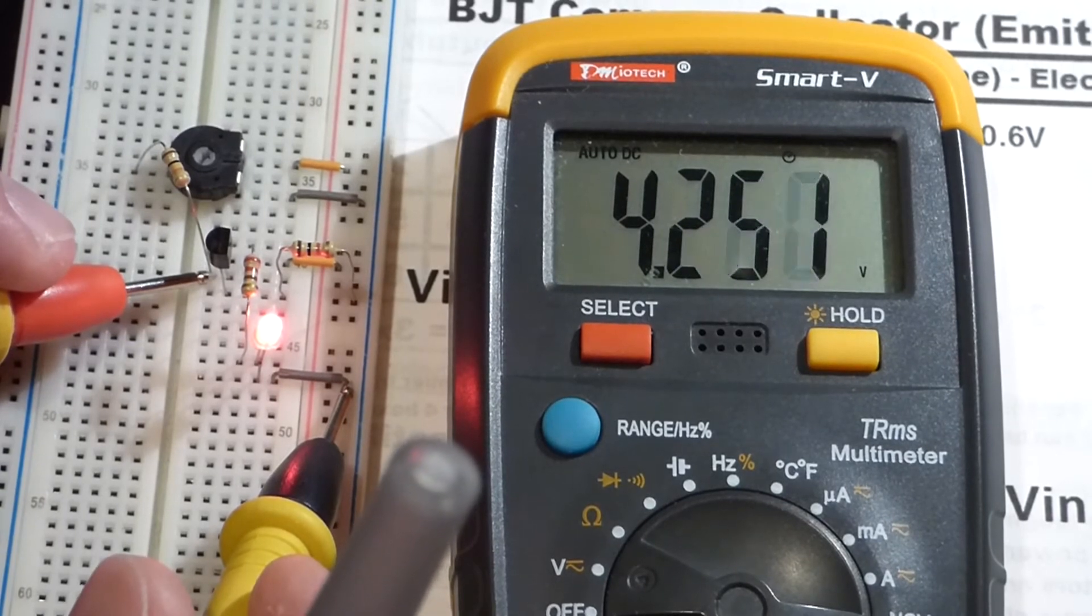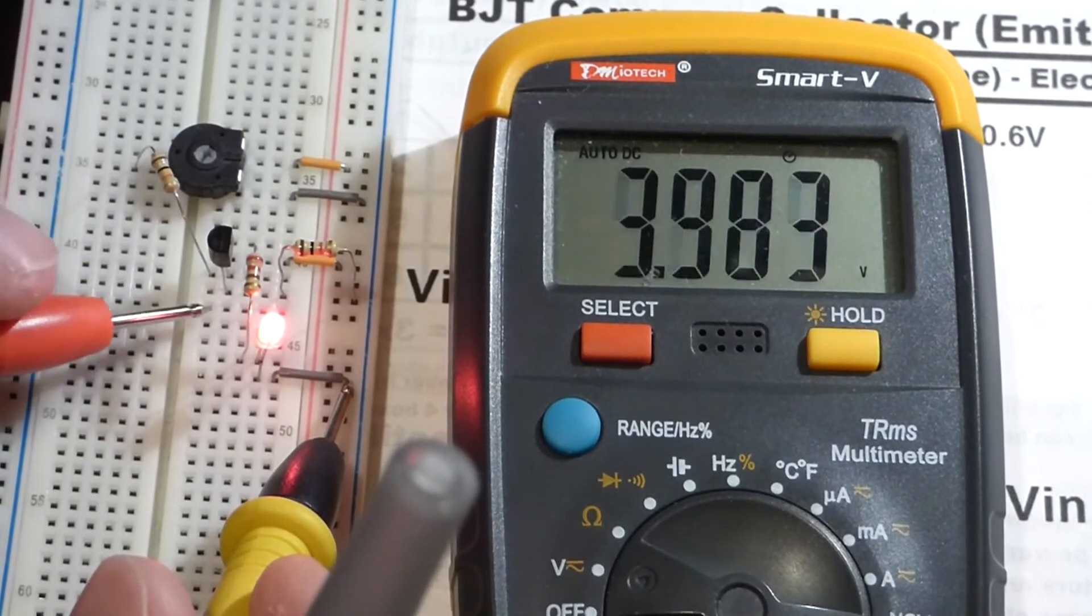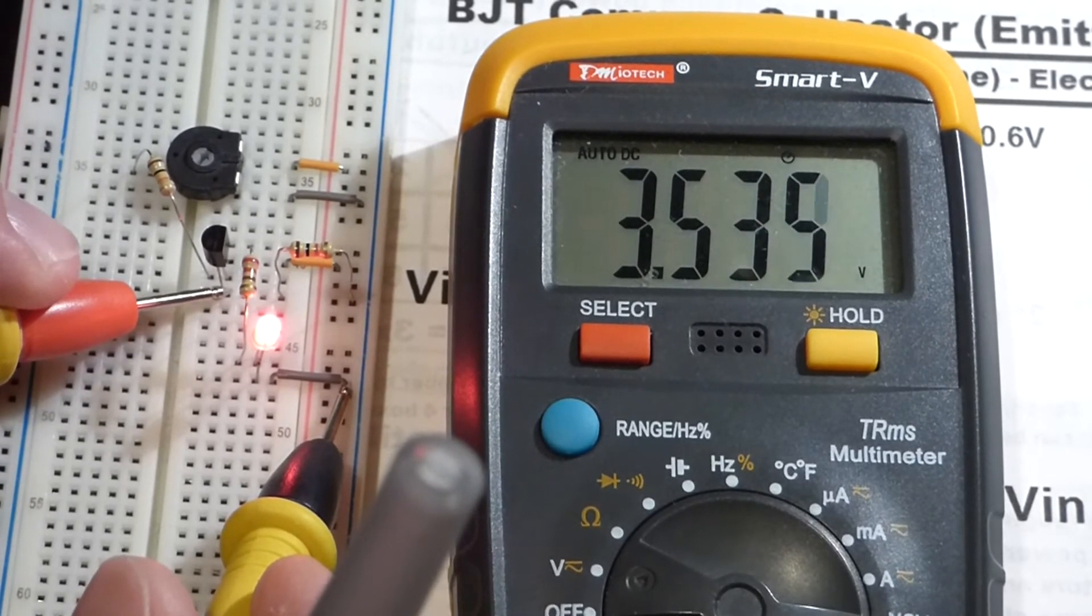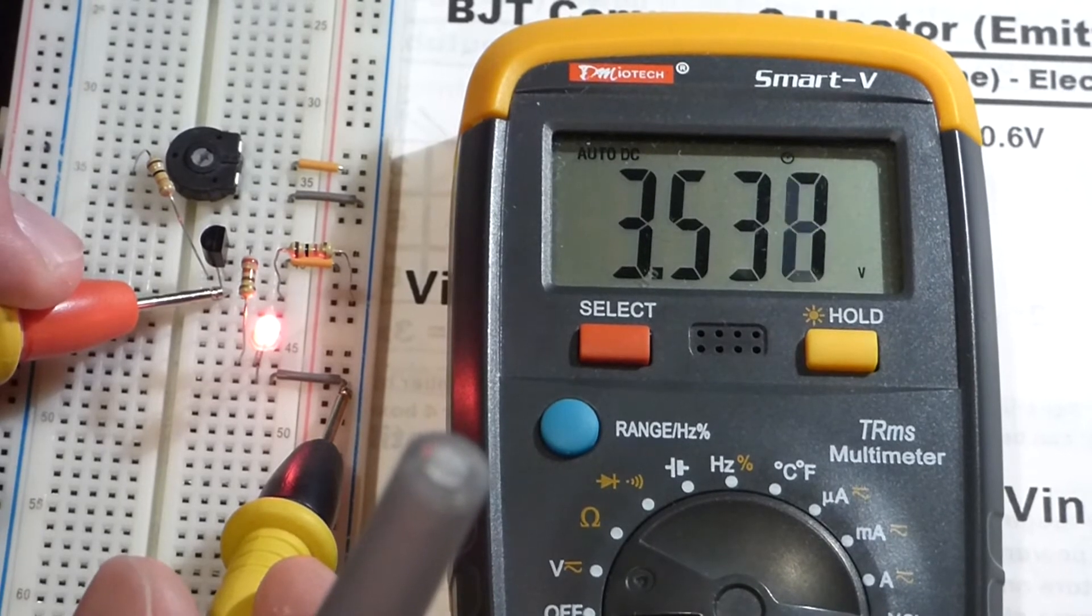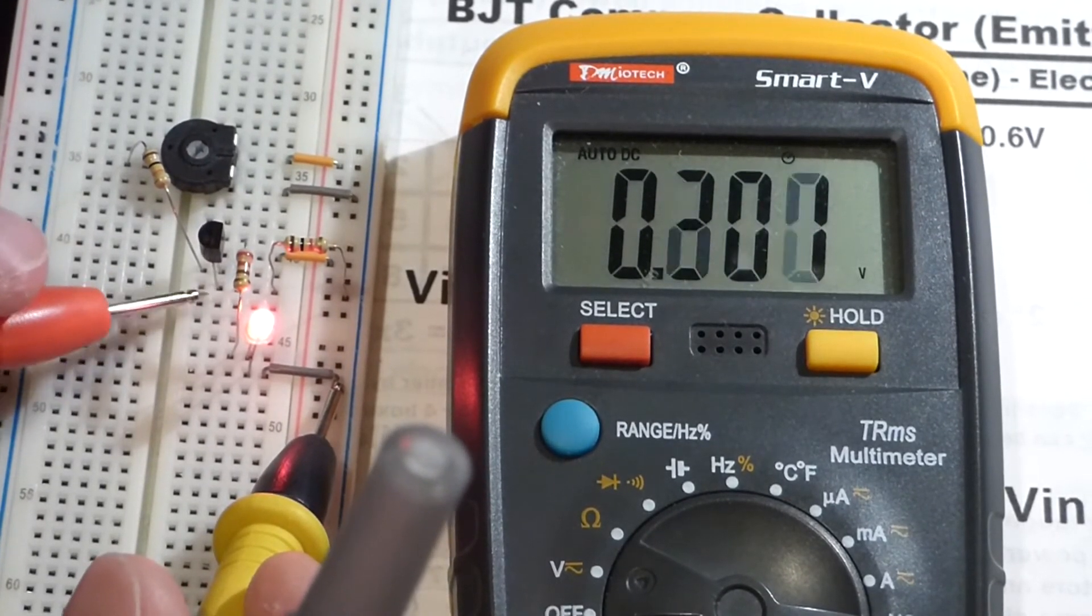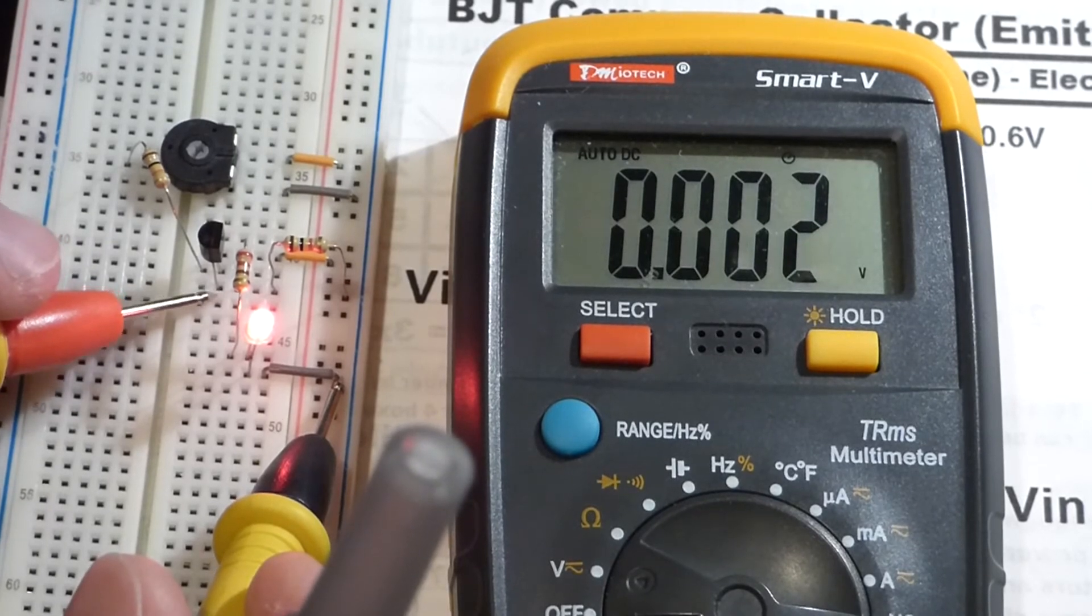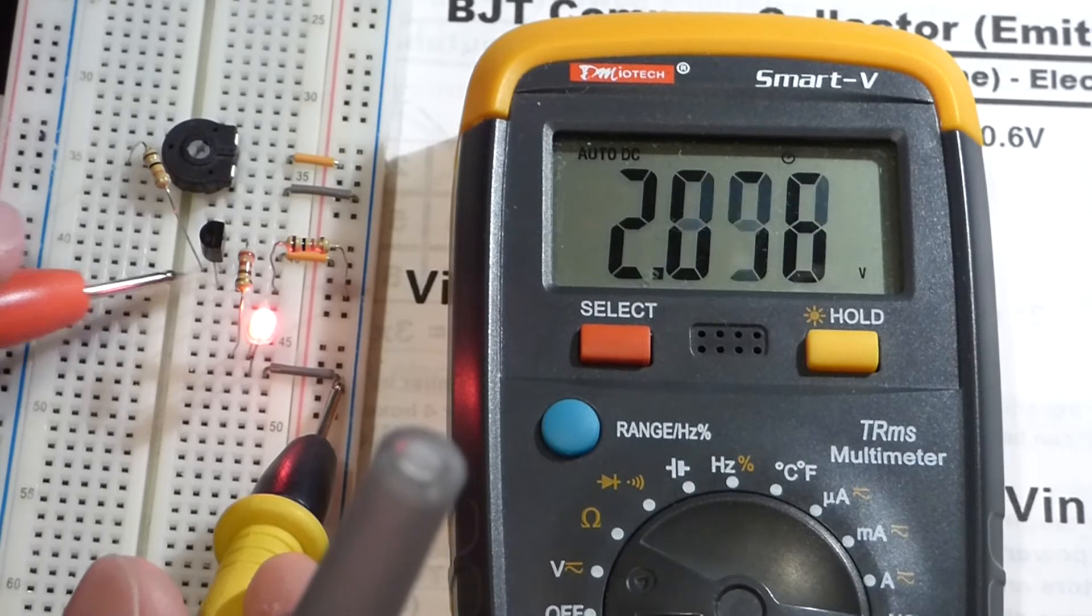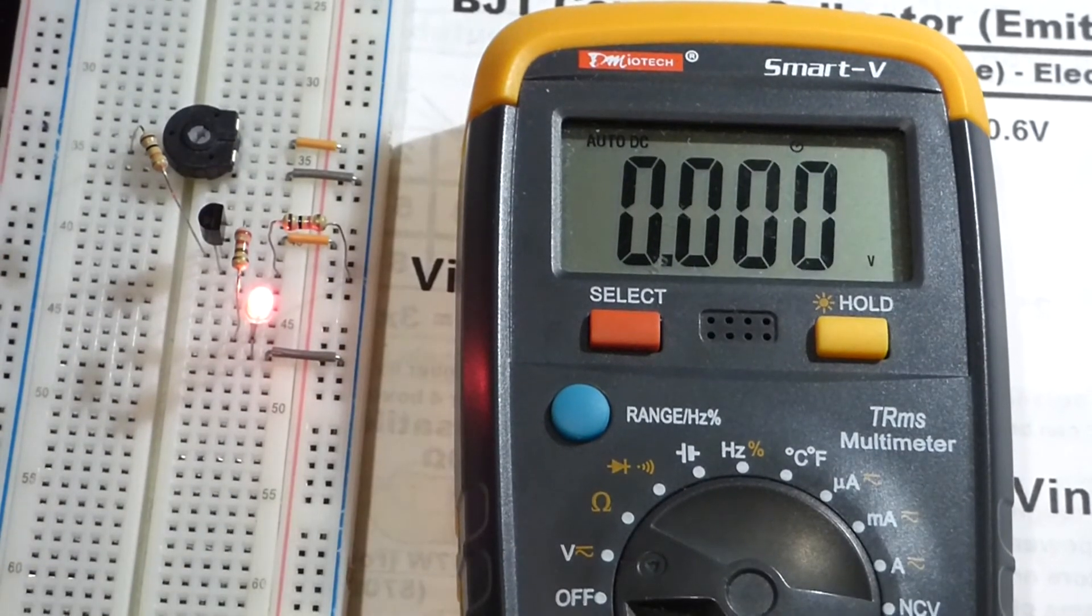So right now it's about 4.3 for various reasons. And down here you see it's 3.5. So again, we're in that about 0.7 volt drop range. But you can see the voltage at the emitter is basically the voltage at the base minus about 0.6, 0.7 volts in that range.